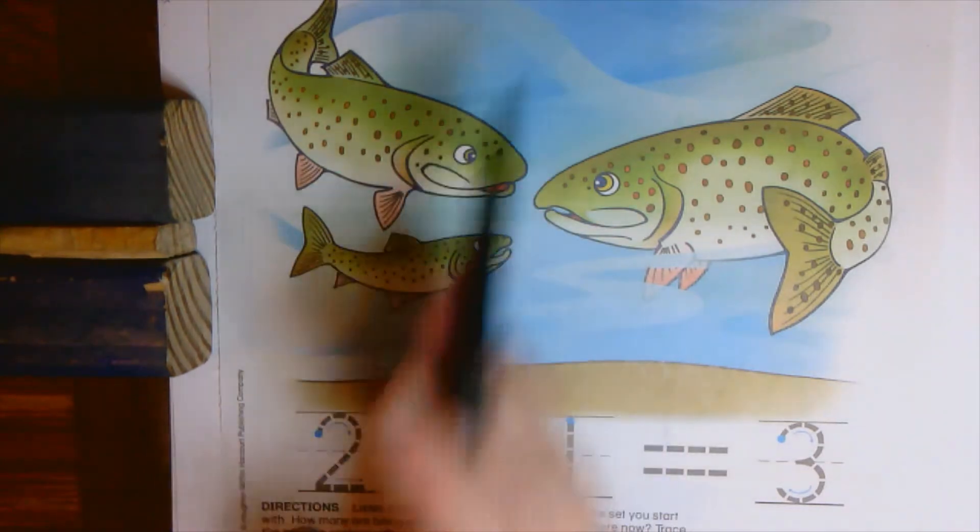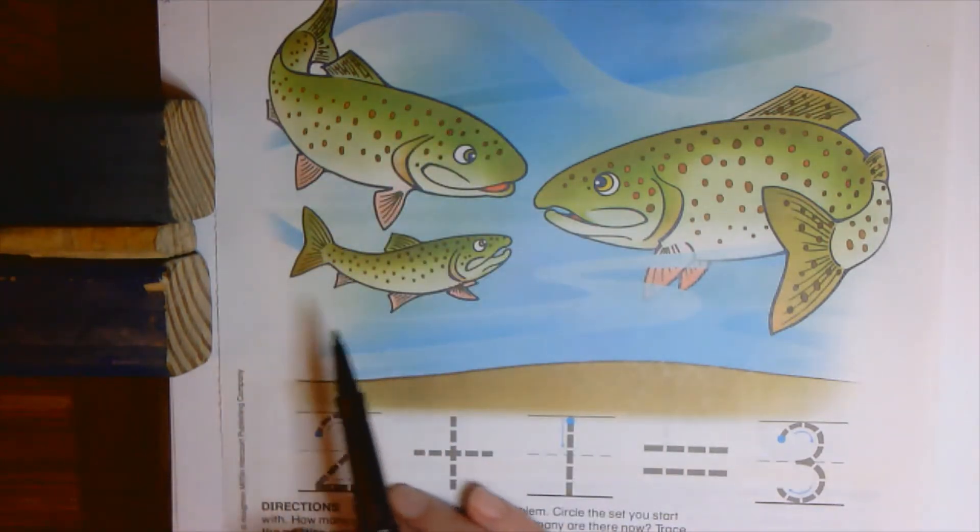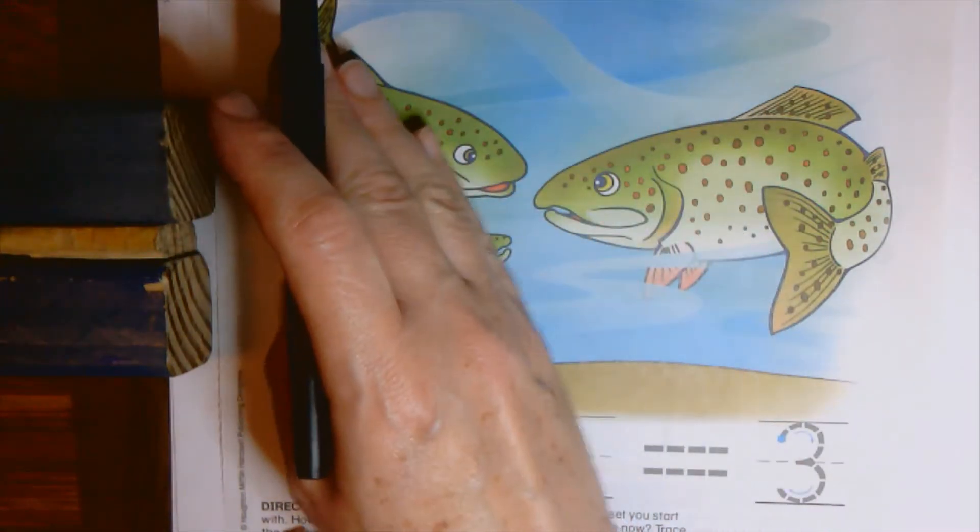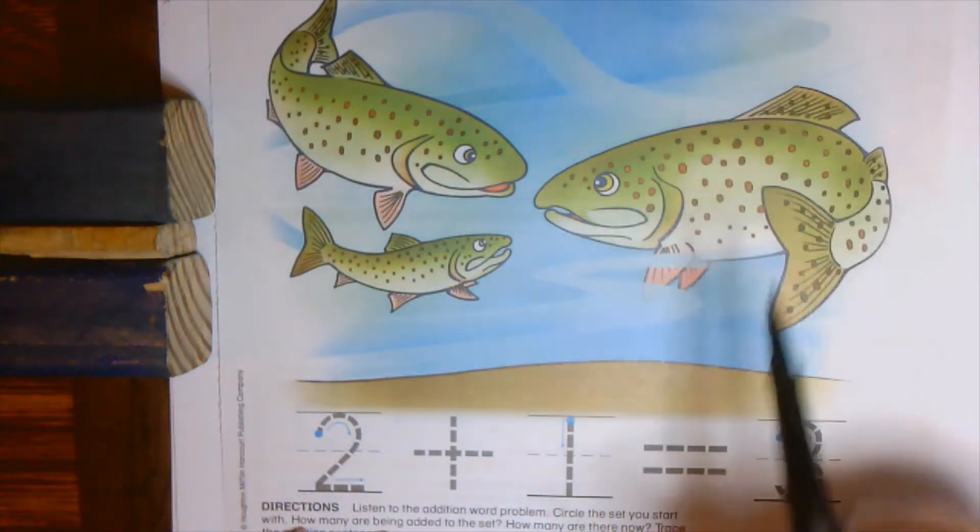So your clue here is going to be, do you see how they write the number sentences this direction? The starting out ones will be on this side and the added to them ones will be on this side.